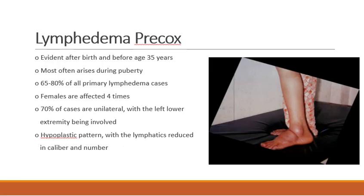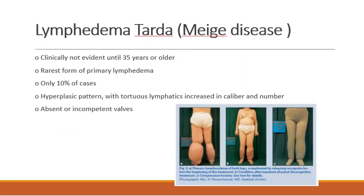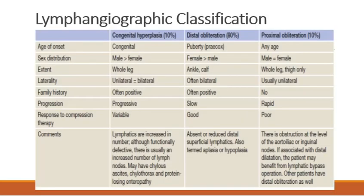Lymphedema precox is evident after birth and before 35 years of age (between 2 to 35 years). It accounts for 65 to 80% of all lymphedema cases. Females are four times more commonly affected; 70% of cases are unilateral with the left lower extremity more commonly involved. A hypoplastic pattern is present with lymphatics reduced in number and caliber. Lymphedema tarda — Meige disease — is not clinically evident until 35 years or older; it is the rarest form at only 10% of cases and has a hyperplastic pattern with tortuous lymphatics increased in caliber and number, with absent or incompetent valves.